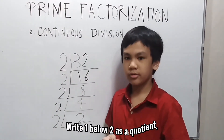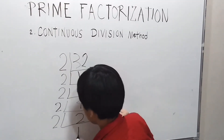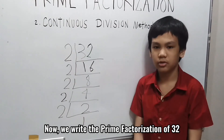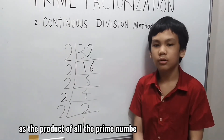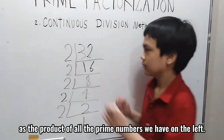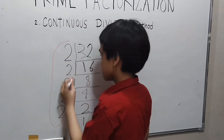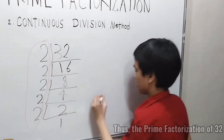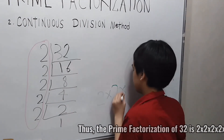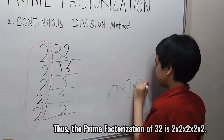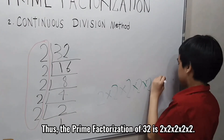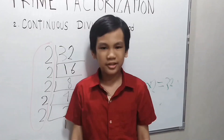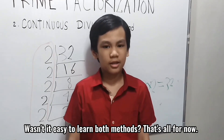We write 1 below 2 as the quotient. Now we write the prime factorization of 32 as the product of all the prime numbers on the left. The prime factorization of 32 is 2 times 2 times 2 times 2 times 2, which equals 32. That's all for now!